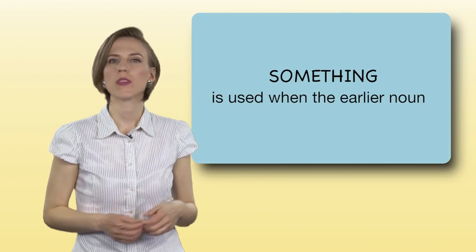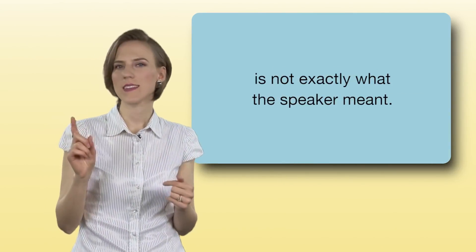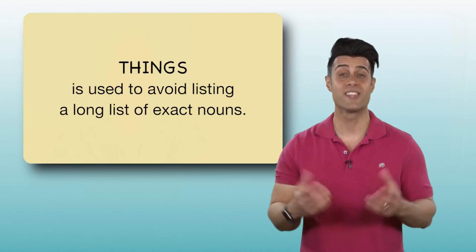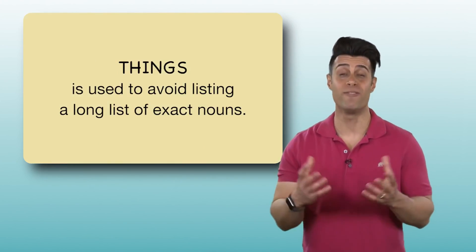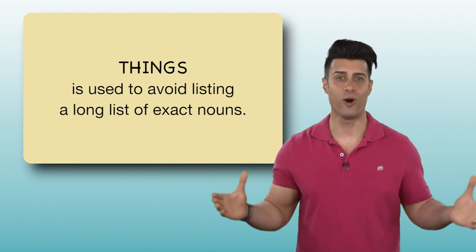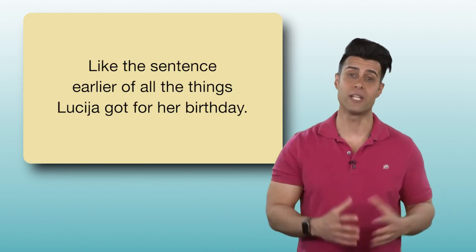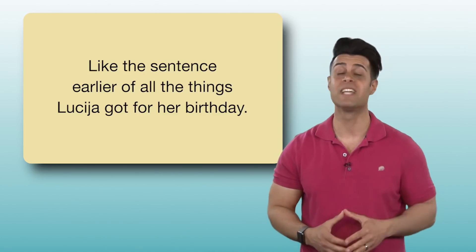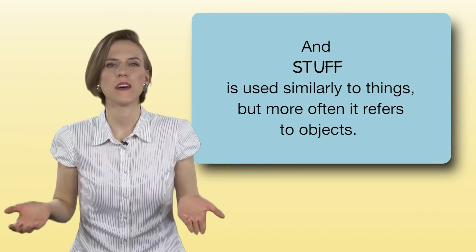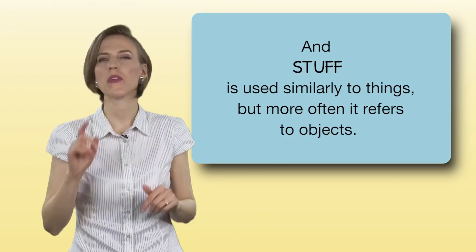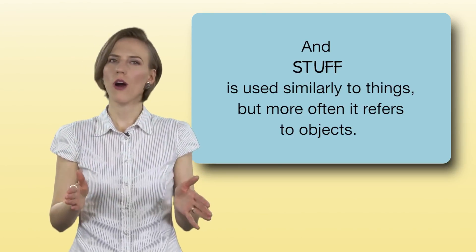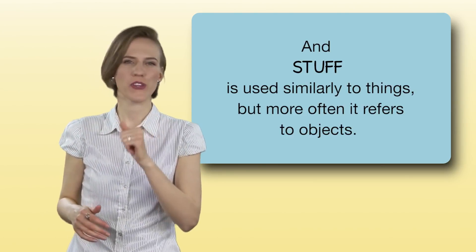Something is used when the earlier noun is not exactly what the speaker meant. Things is used to avoid listing a long list of exact nouns. Like the sentence earlier of all the things Lucia got for her birthday. And stuff is used similarly to things, but more often it refers to objects.